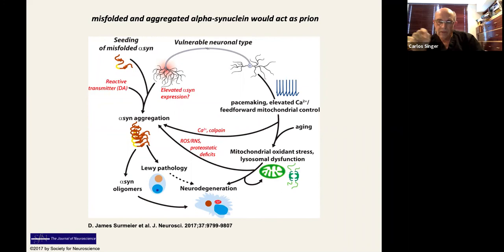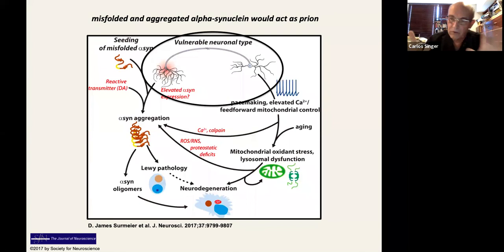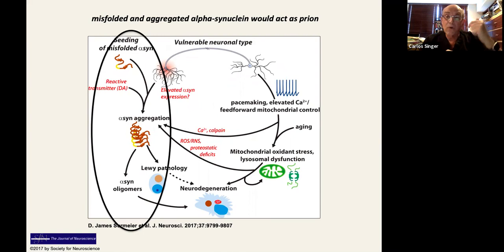And what you start thinking of is here, you have a vulnerable neuron. The neuron is rendered vulnerable by the toxins or the pathogenic mutations or their interaction. It increases its expression of alpha-synuclein. It also receives misfolded alpha-synuclein message from another cell.